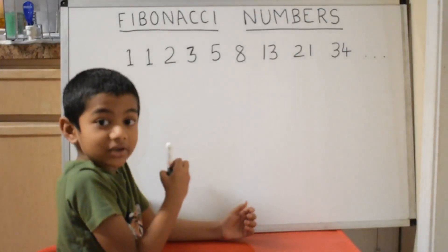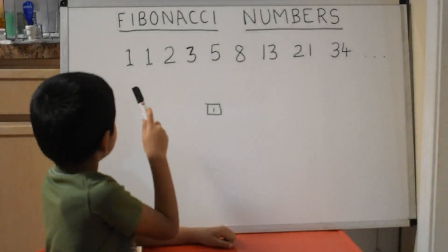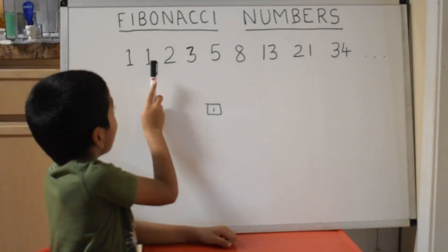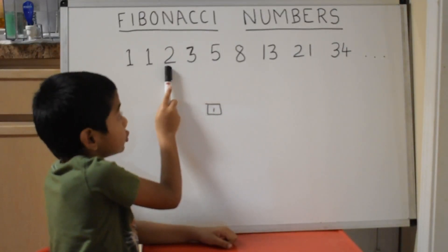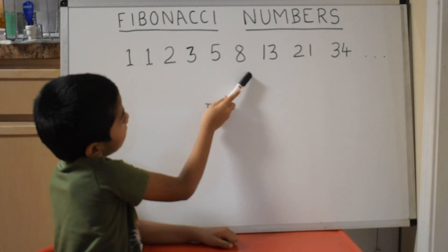Each number is the sum of the previous two numbers in the sequence. Let's see here. 1 plus 1 becomes 2. 1 plus 2 becomes 3. 2 plus 3 becomes 5. 3 plus 5 becomes 8.